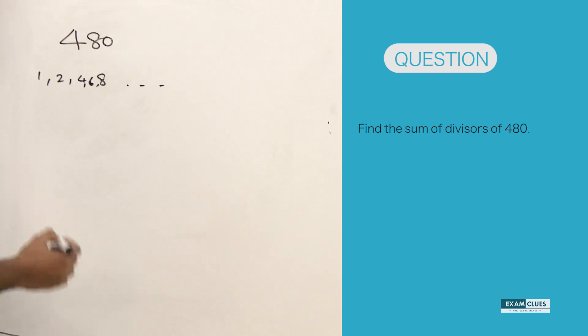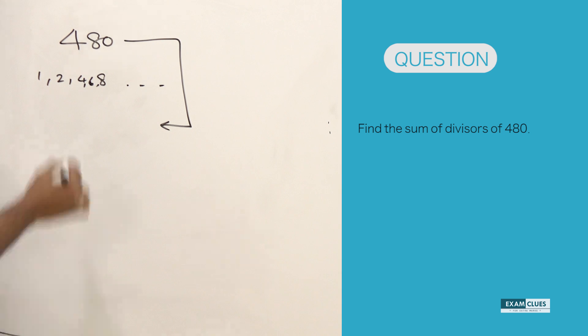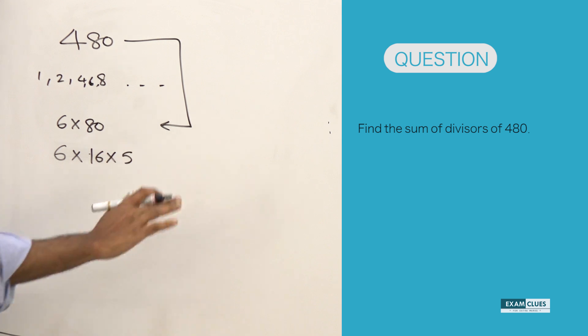So the formula says first you need to do the factorization for this 480. So what is the factorization for 480? What are you supposed to do? Let's look at it. It can be written as 6 into 80. This thing can be simply written as 6 into 16 into 5. I am just trying to break it up.